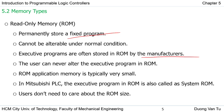Similarly on a computer or mobile phone, the ROM memory cannot be changed, and if you force a change it may damage your system. It's dangerous for the user to update or change the program in ROM. Usually ROM memory is a very small size — just enough for the permanent program used by the manufacturer. In Mitsubishi PLC, the executive program in ROM is also called a system ROM.